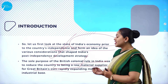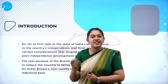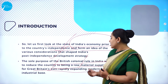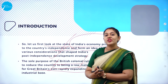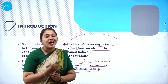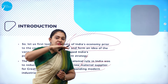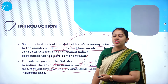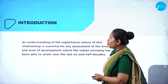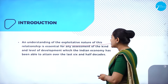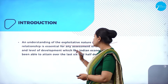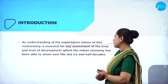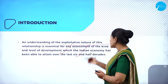They wanted our country's resources to be used as raw materials for Great Britain - that is today's Europe. They wanted to expand their industries, so they took advantage and exported all our resources from India as raw materials to their industries in Europe. That was the main objective behind the colonial rule. Understanding the exploitative nature of this relationship is essential for an assessment of the kind and level of development which the Indian economy has attained over the last six and a half decades.